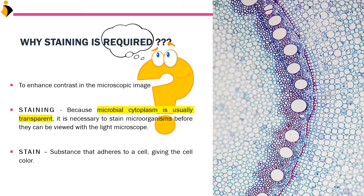It is necessary to stain microorganisms before they can be viewed under the light microscope. Now, what is a stain? A stain is a substance that adheres to the cell. The stain can be negatively charged, positively charged, or neutral. But the microbial cytoplasm and cell organelles are always negatively charged.